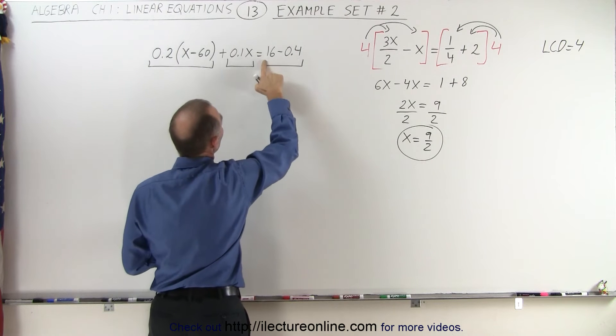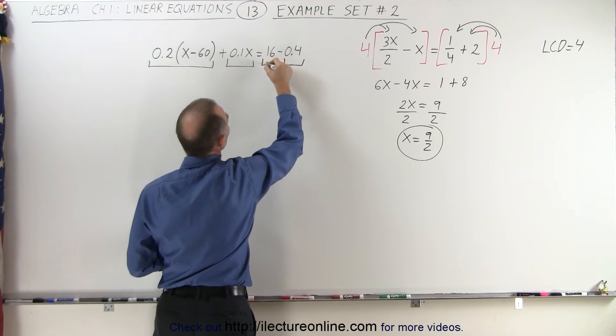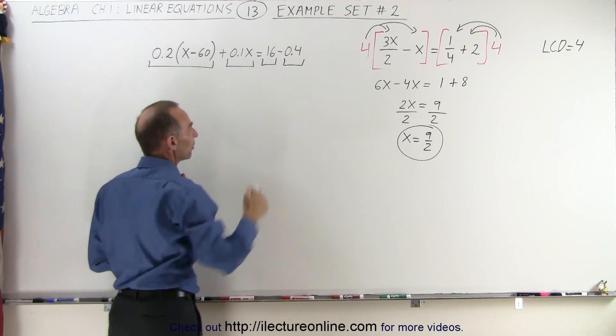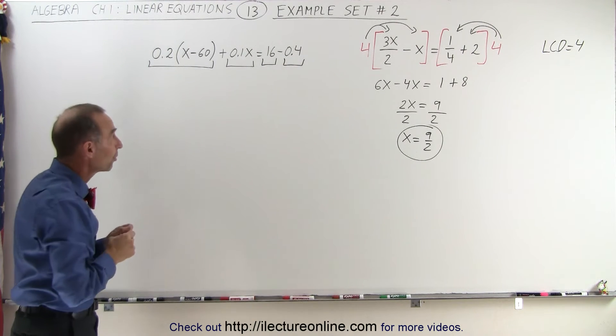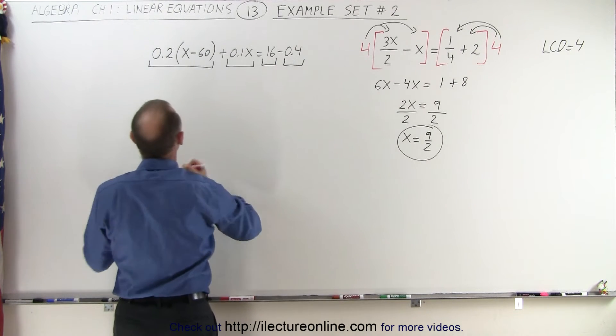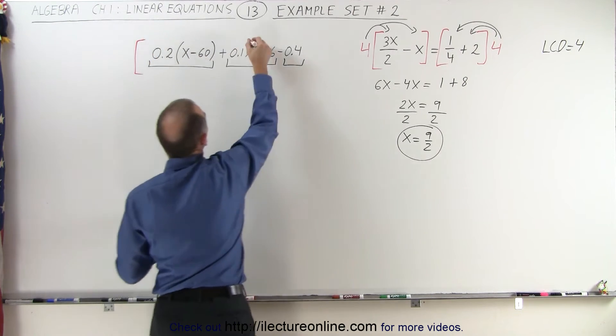Actually those are two terms, I'll take that back. Here's a term right here and there's a term right there. This one does not have a decimal place, but this one does, but the largest number of decimals is 1, which means we can multiply both sides of the equation by 10.